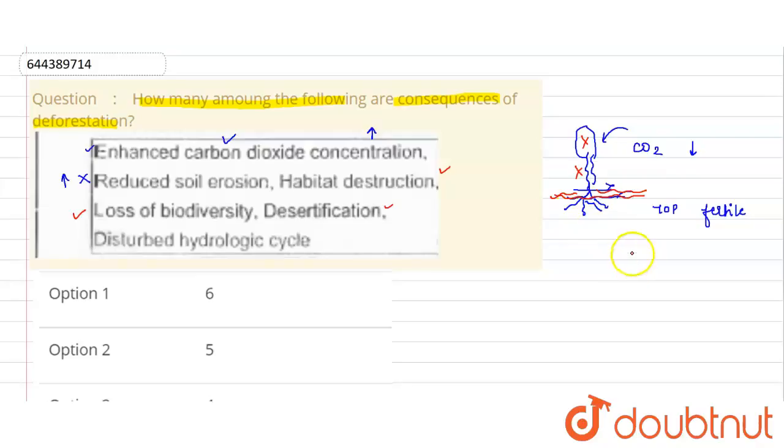As soon as the topsoil will be lost, what will happen? This area will turn into desert. That is called desertification. Disturbed hydraulic cycle. Hydraulic cycle is the water cycle.